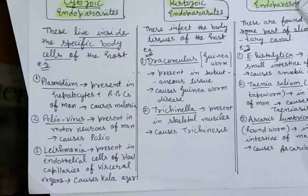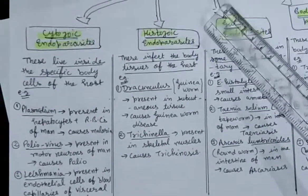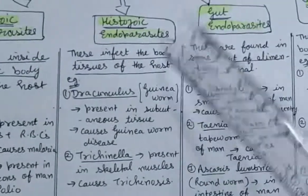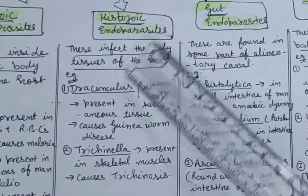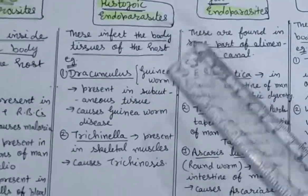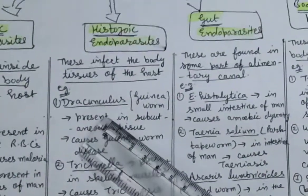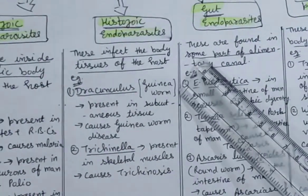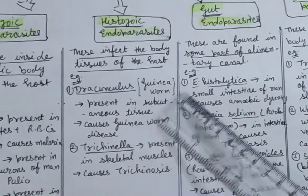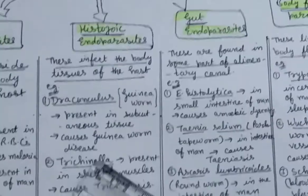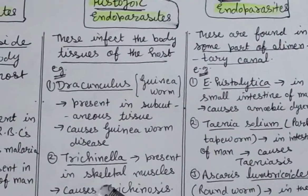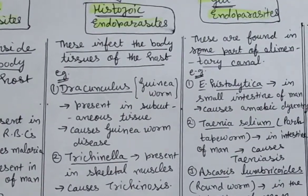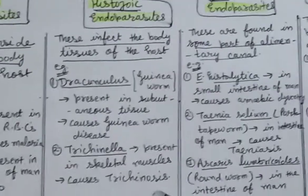The next type of endoparasitism is histozoic endoparasites. Histozoic, as the name indicates, refers to body tissues. The first example is Dracunculus, whose common name is guinea worm. It is present in the subcutaneous tissue of the host.